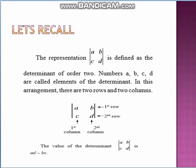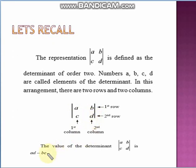Let us recall something we have already learned in school days. The arrangement A, B, C, D enclosed in vertical bars is defined as a determinant of order 2. The numbers A, B, C, D are called elements. There are two rows and two columns. The first row is AB, second row is CD, first column is AC, second column is BD. The value of the determinant is AD minus BC, obtained by cross multiplication.